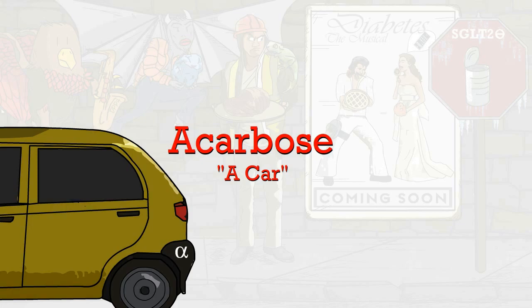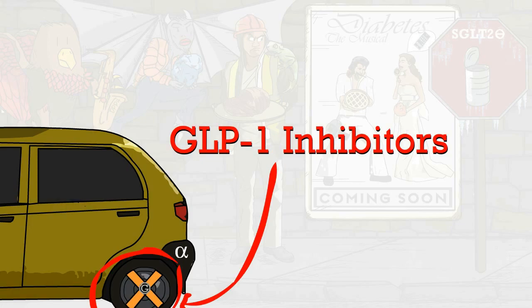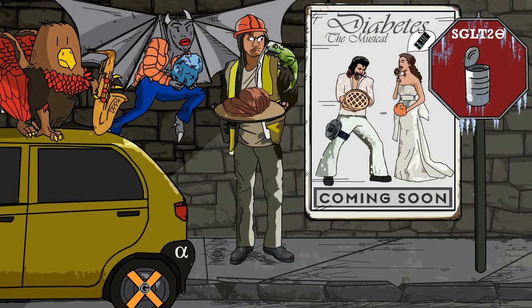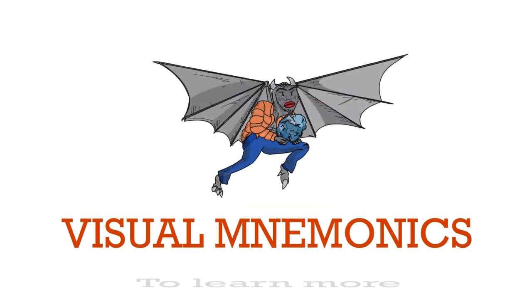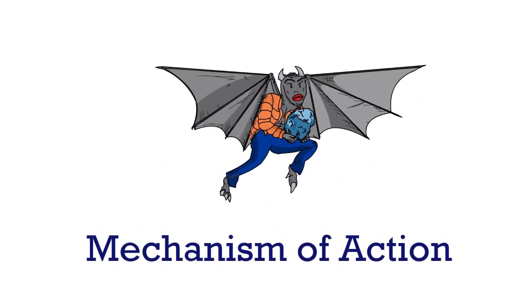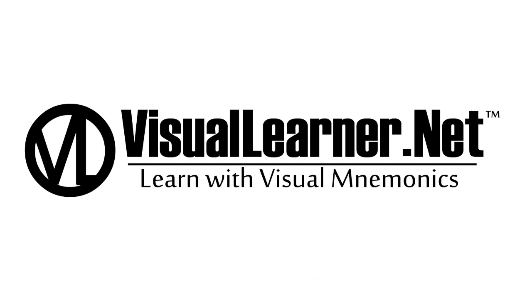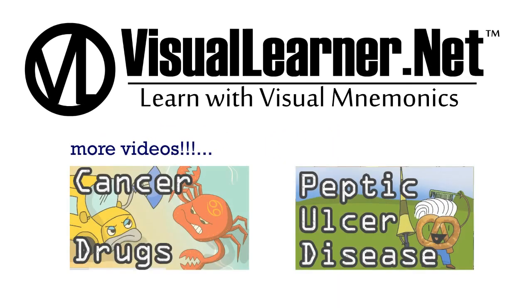Lastly, glucagon-like peptide-1 inhibitors, or GLP-1 inhibitors, is represented by the G on the car wheel's center cap. The example is exenatide, which is the orange X on the wheel. Alright folks, that's it for this video. To learn more about visual mnemonics and the drugs used in diabetes, including mechanisms of action and side effects, please check out our website at visuallearner.net. Happy studying!